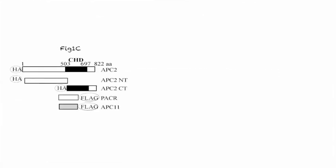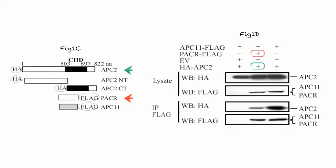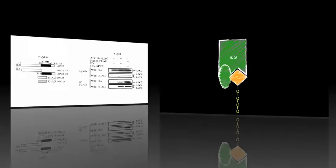To investigate this possibility, immunoprecipitation experiments were conducted in which a HA-tagged APC2 and a flag-tagged PACER were co-expressed in human cells. When PACER was isolated via its flag tag, the presence of APC2 was detected using an antibody against the HA-tag. This indicates that PACER indeed binds APC2.